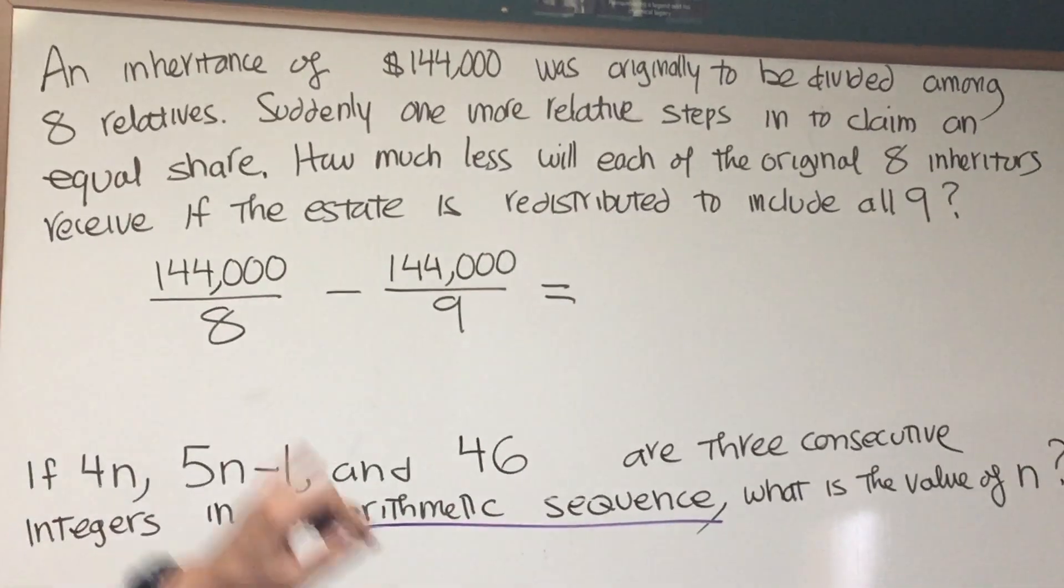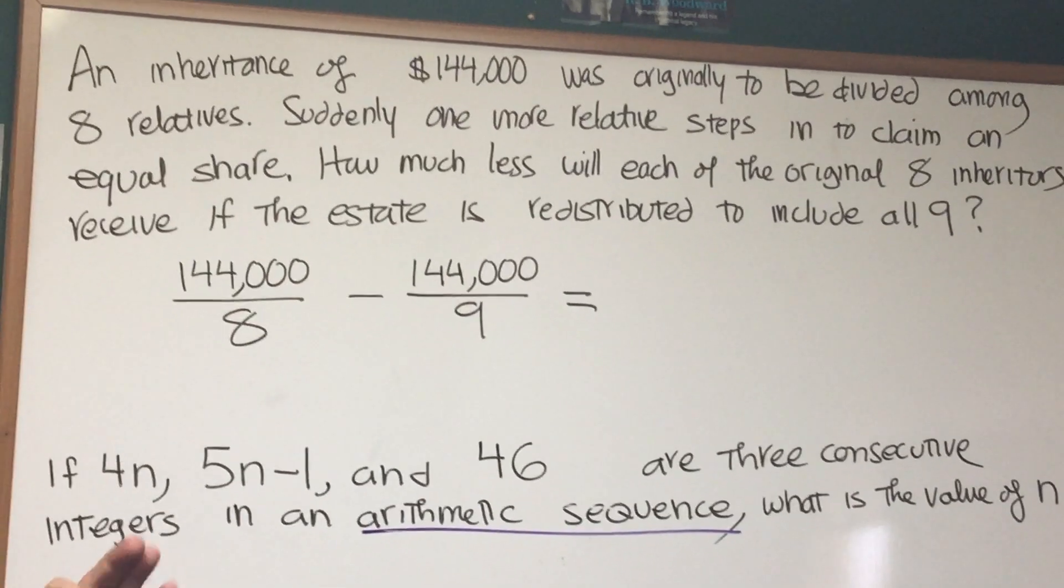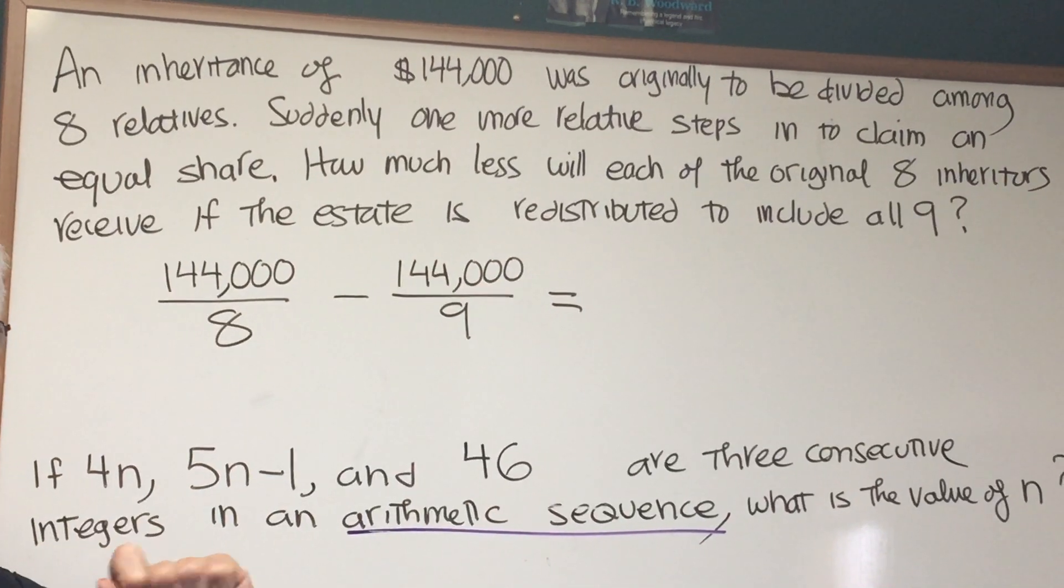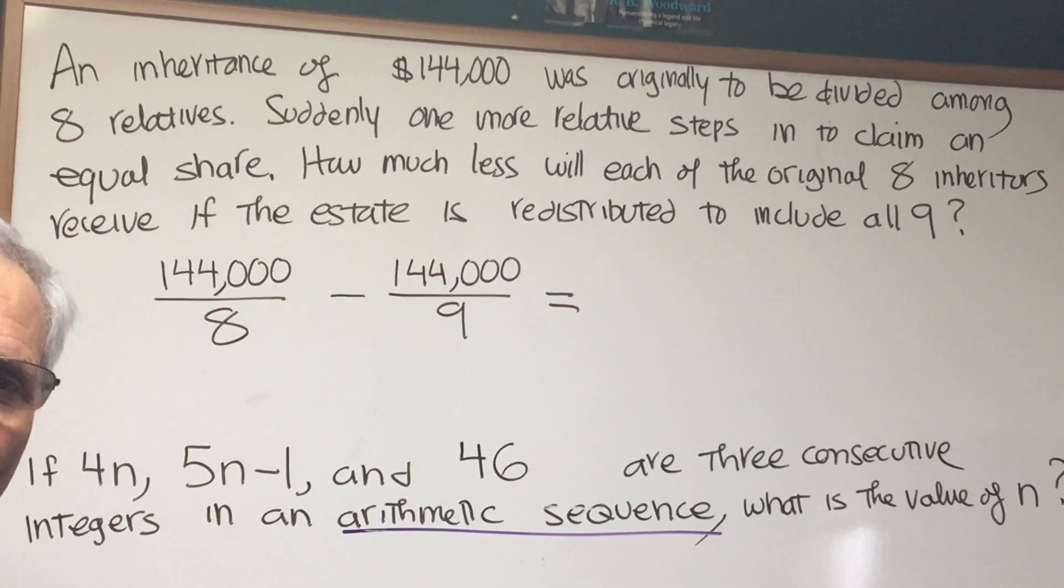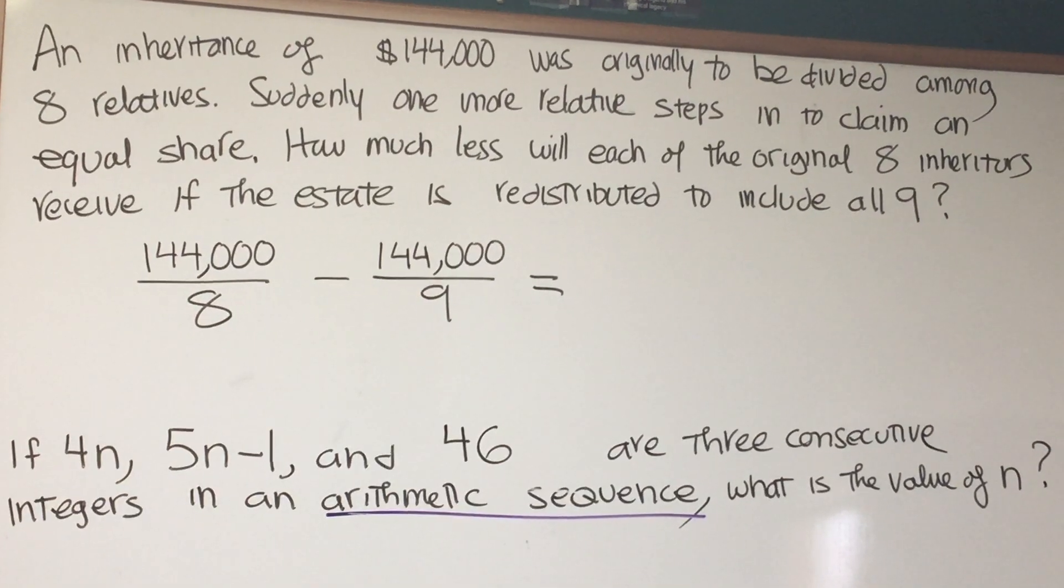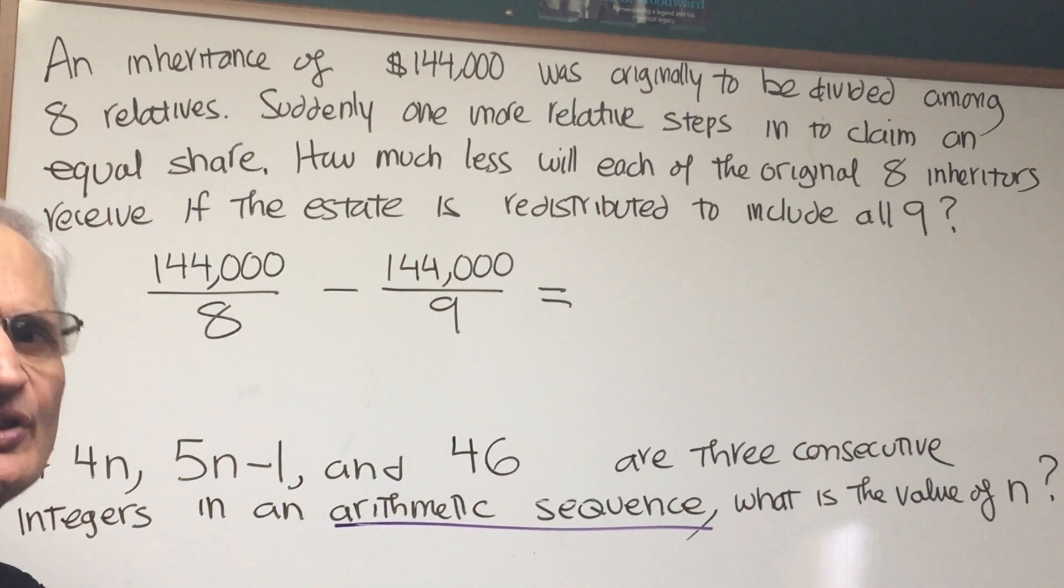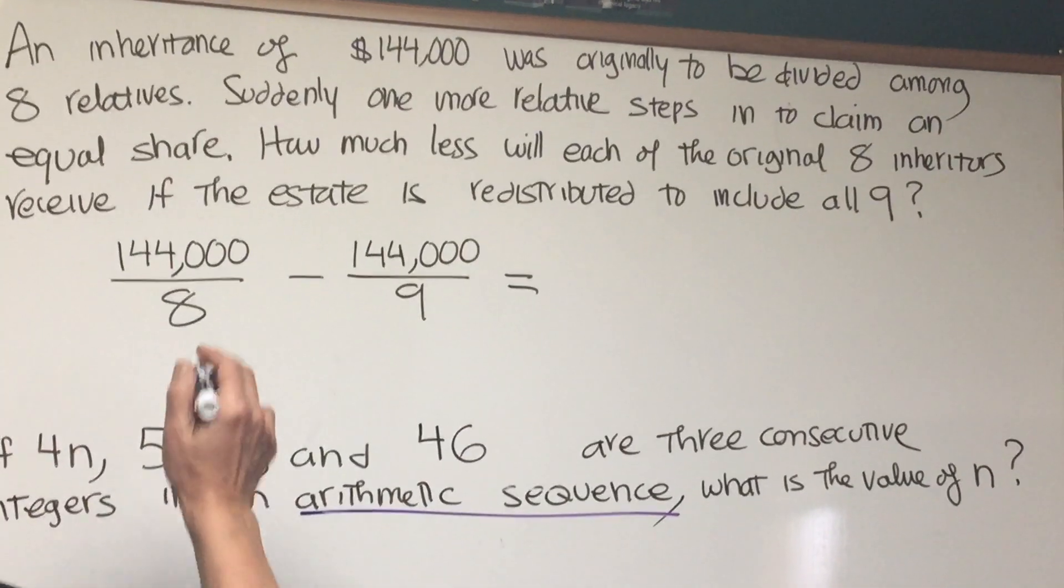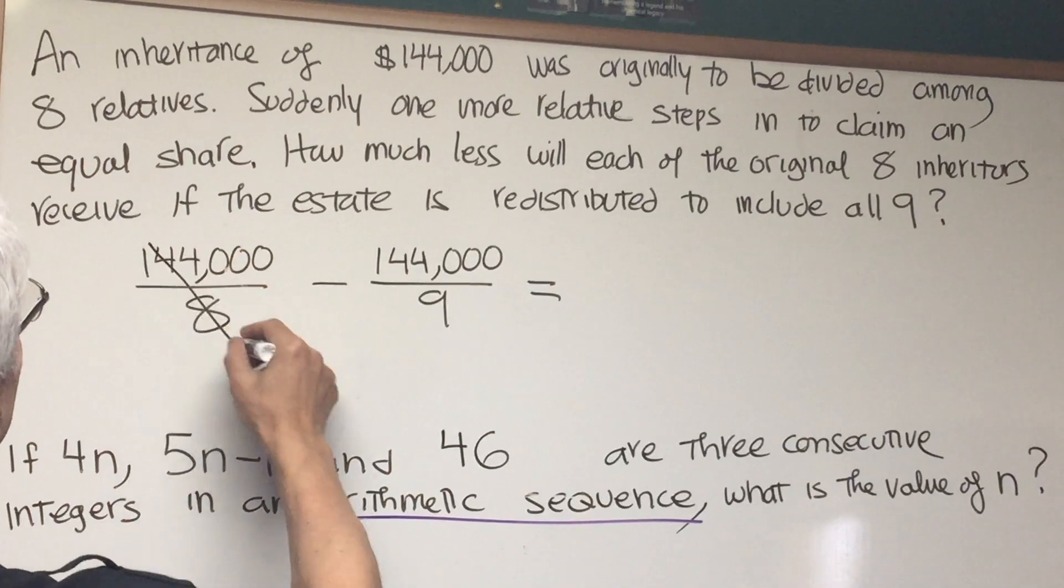Now, I want you to notice that the eight is going to divide nice and evenly into the 144. The nine is also going to divide nice and evenly into the 144. When you're doing the DAT problems, they're constructed such that they will work out most of the time. They'll work out to nice, even numbers. They don't want to really create more difficulties for you than necessary. So let's divide eight into this.